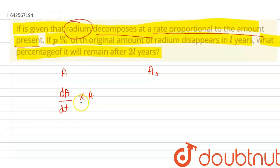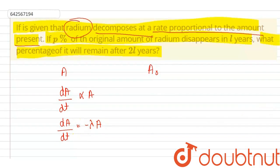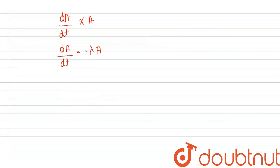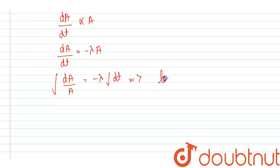On removing the proportional sign, we will use lambda, but with a negative sign because it is decomposing. On integrating, dA upon A equals minus lambda dT plus a constant of integration.